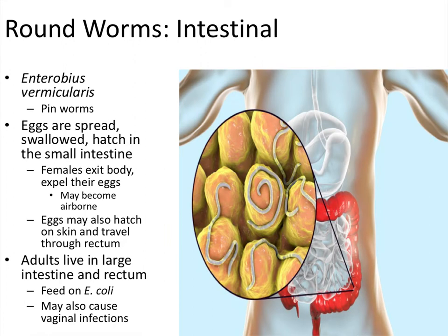Our next worm is another roundworm that is also an intestinal parasite for the most part. This one is probably the most common type of worm infection in the United States. Its scientific name is Enterobius vermicularis, but most people just call it the pinworm. The way pinworms are transmitted is the eggs are spread, again, through the fecal-oral route in most cases.